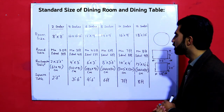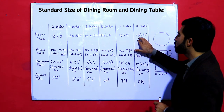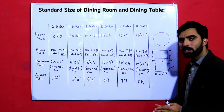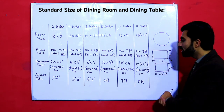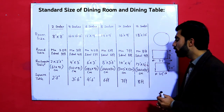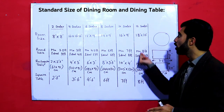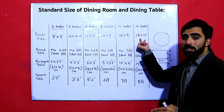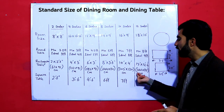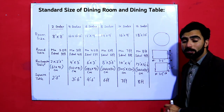For twelve sitters, the dining room size should be eighteen by ten feet. The minimum round table size should be eight feet and the ideal is nine feet. For a rectangular table, the size is twelve by four point five feet, or 366 by 135 centimeters. For a square dining table, it should be eight by eight feet.